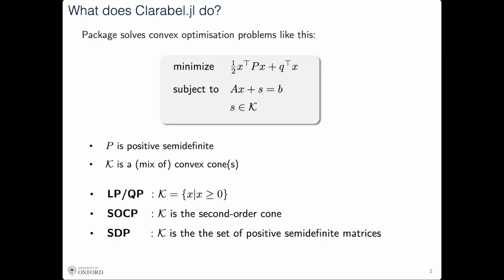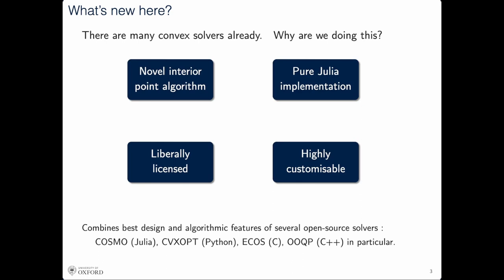Before I go into the details, it's worth asking why we need a new convex optimization code when there are already other solvers available. We had four motivations. First, we have a nice new method for solving convex optimization problems using interior point, giving substantially reduced iteration count and cheaper iterations. Second, we wanted rapid prototyping, so Julia made a lot of sense. Third, a lot of the best convex optimization codes are commercial — we wanted something liberally licensed and free, so this code is Apache licensed. Finally, we wanted something flexible and highly customizable so we could make custom solvers for particular problem classes.